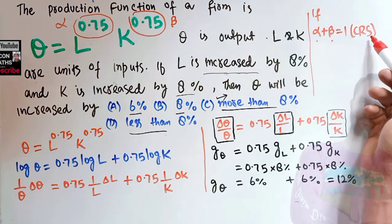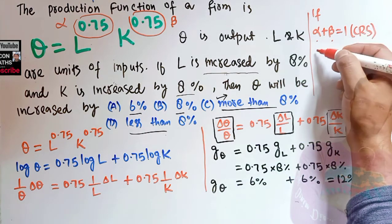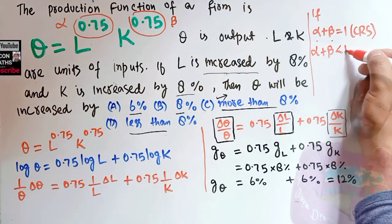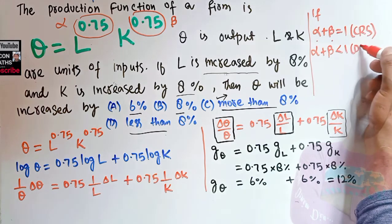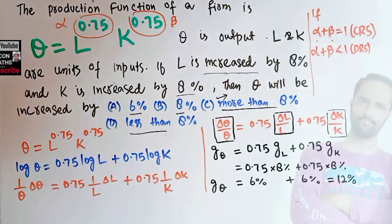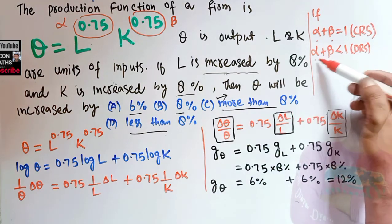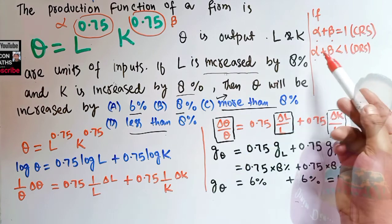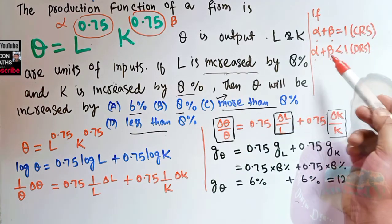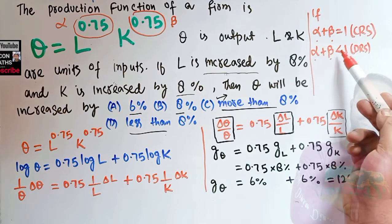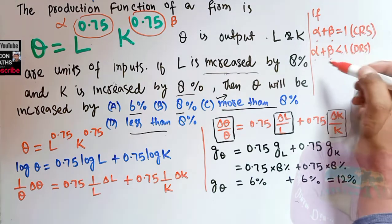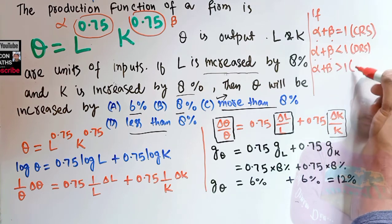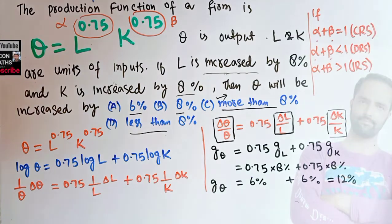If alpha + beta — the sum of the exponents — is less than 1, we have decreasing returns to scale. It's not necessary that alpha and beta be equal; what matters is their sum. And if alpha + beta is greater than 1, we have increasing returns to scale (IRS).